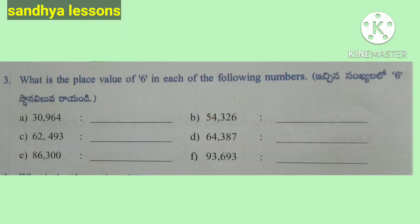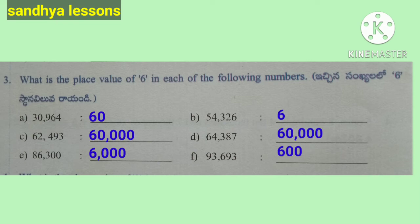Third: What is the place value of 6 in each of the following numbers? Place value of 6 in 30,964: 6 is in the tens place, so 6 × 10 = 60. Place value of 6 in 54,326: 6 is in the ones place, so 6 × 1 = 6.